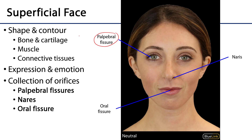There are bilaterally paired nares — those are the nose orifices — and then there is the singular oral fissure, or the mouth.